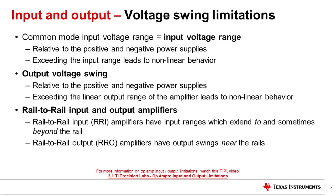Output voltage swing is the range of output voltages that allow for linear operation of output signals. Output swing is also defined relative to the power supply rails and will behave non-linearly if you exceed this range. When an op-amp is said to be rail-to-rail in, this means the input common mode voltage range is up to or beyond the power supply rails. When an op-amp is said to be rail-to-rail out, this means the output voltage swing is near the power supply rails. The output cannot swing all the way to the rail because of finite impedance of the output transistors.